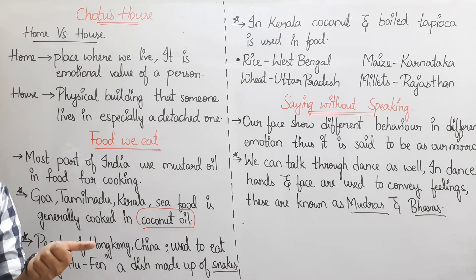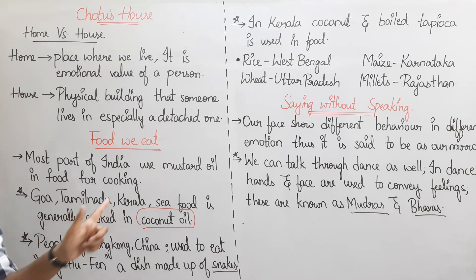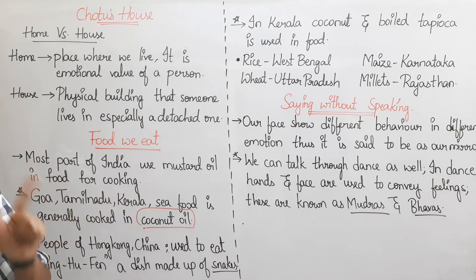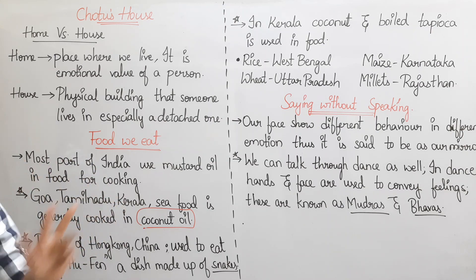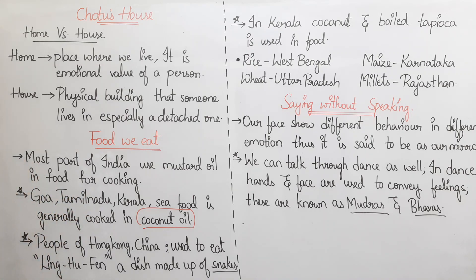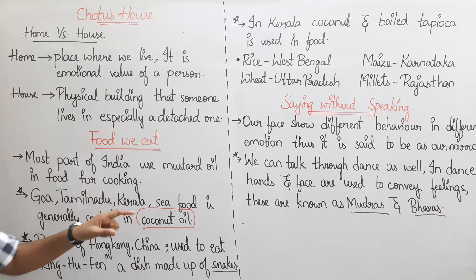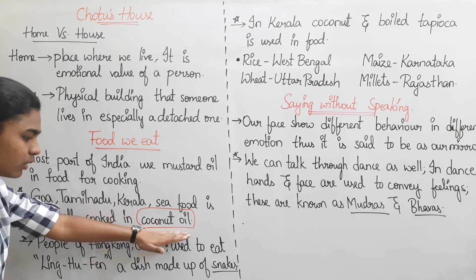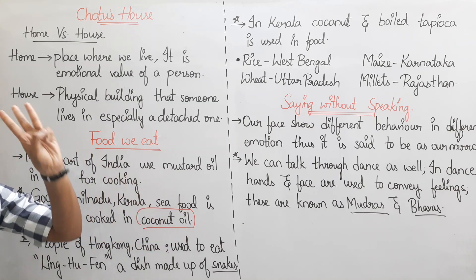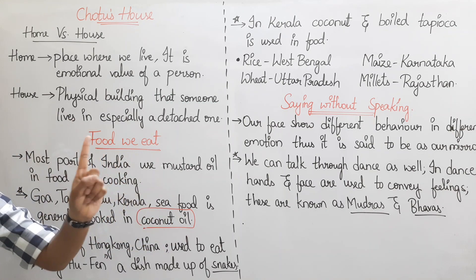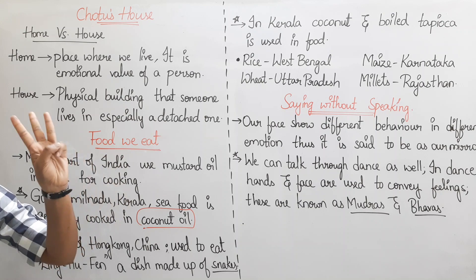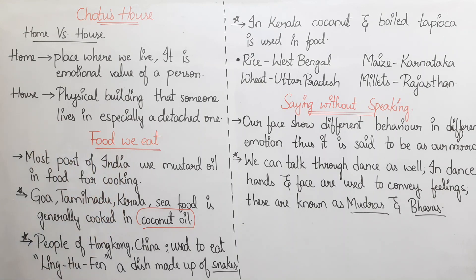Tamil Nadu is known for Idli Sambar; Kerala has its traditional dishes; Goa has its own enjoyment foods. In India, the places where food is prepared in coconut oil are these three: Goa, Tamil Nadu, and Kerala.